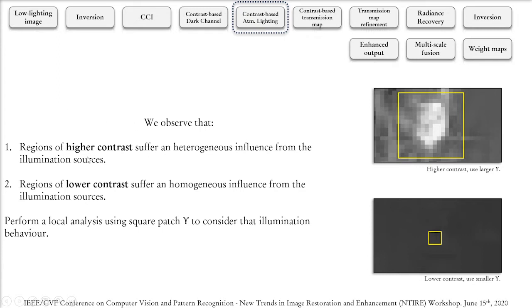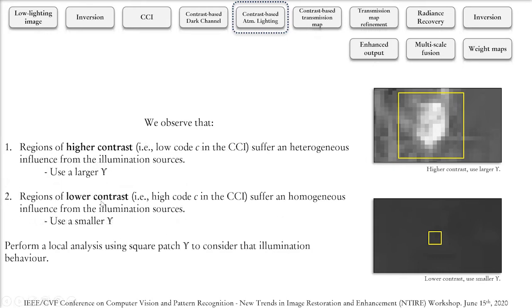We then observe that regions of higher contrast that suffer an heterogeneous influence from the illumination sources and those of lower contrast will suffer a roughly homogeneous influence from those same sources need to be analyzed locally with a different patch size, which we are calling Upsilon, that will consider this behavior. For regions of lower contrast that are identified with high codes C in the contrast code image, we only need to look at a smaller number of pixels to pick one that would represent correctly the local illumination characteristics.